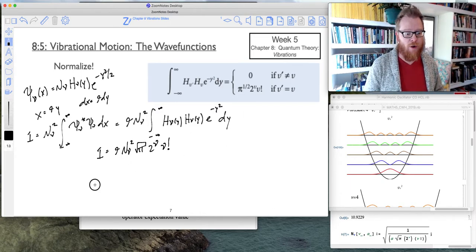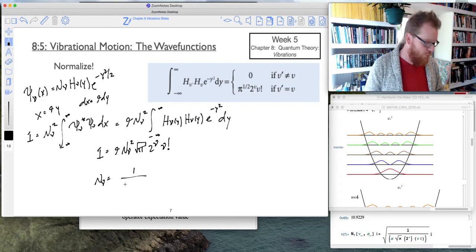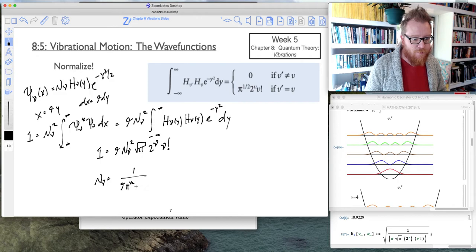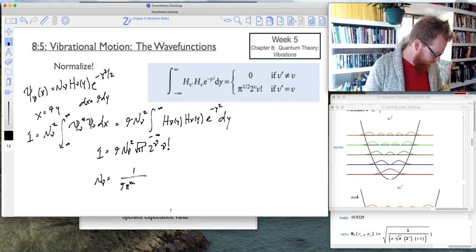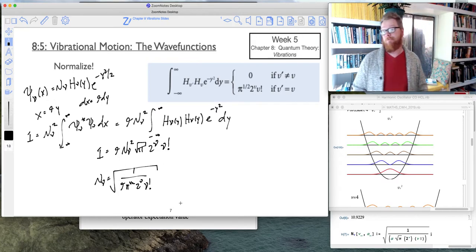And so now I just have to algebraically rearrange this for the normalization constant. And when we do that, we get the following: one over alpha, I guess I will write pi to the one half because I've got that square root right there. I'm gonna have a square root of a square root, times two nu times nu factorial all square root.